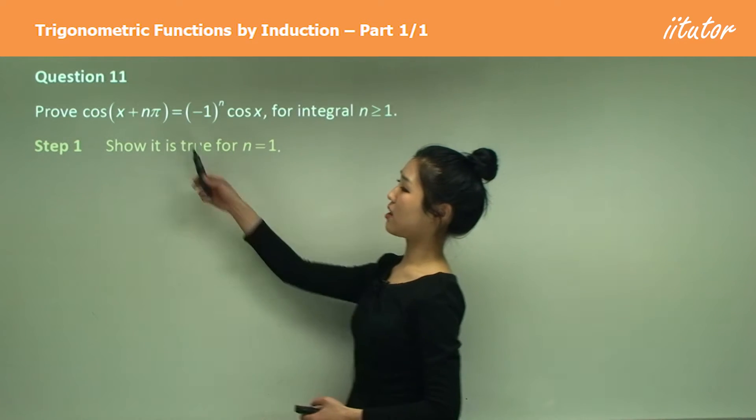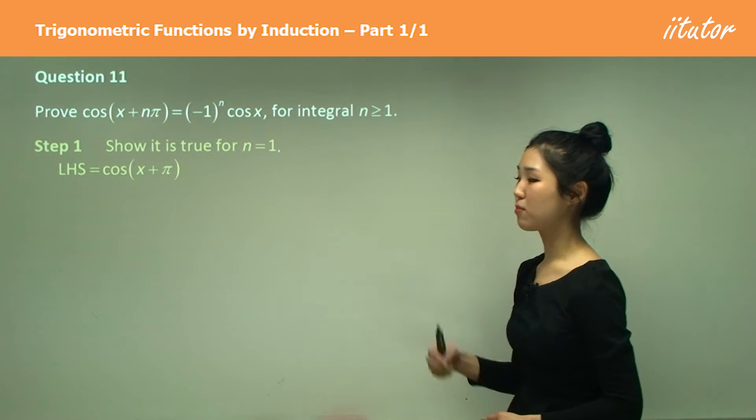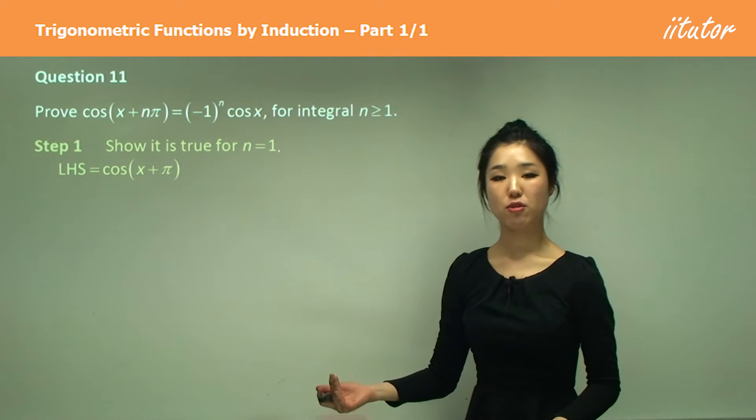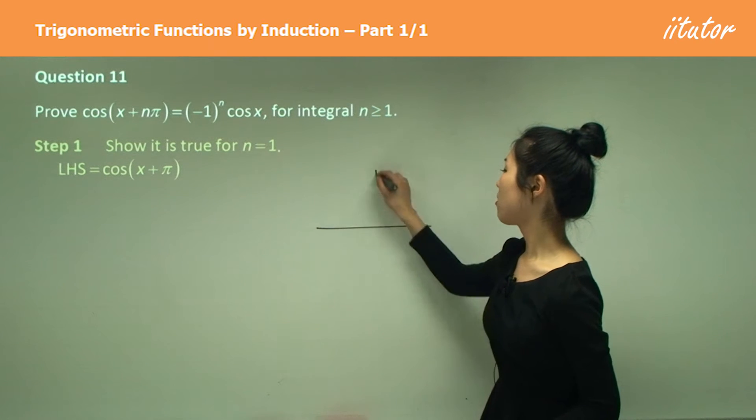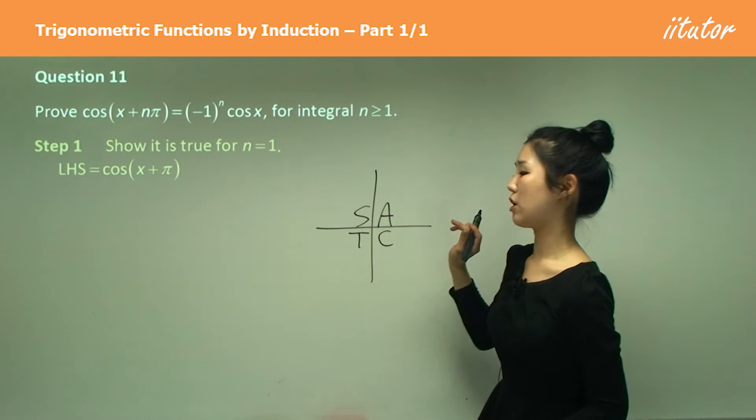So I simply put n equals to 1 to here for the left hand side just like this. So it's just going to be x plus pi in front of the cos. Guys remember when we did our trigonometric functions? Remember our ASTC rule, our all stations to central rule?